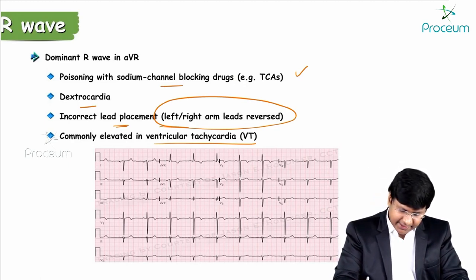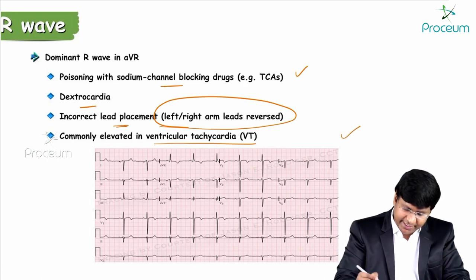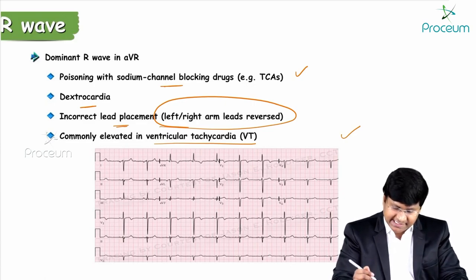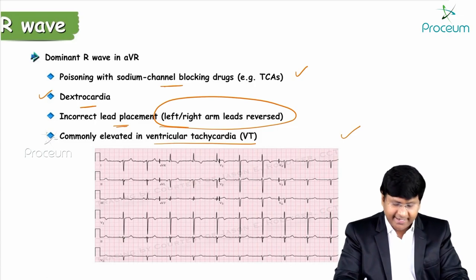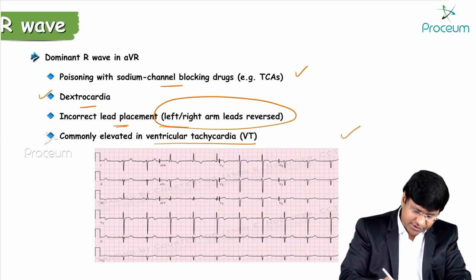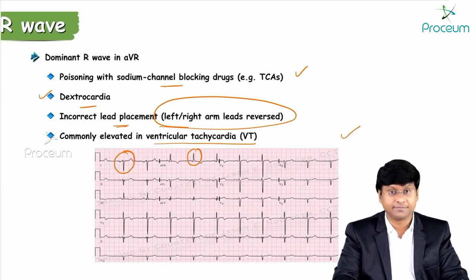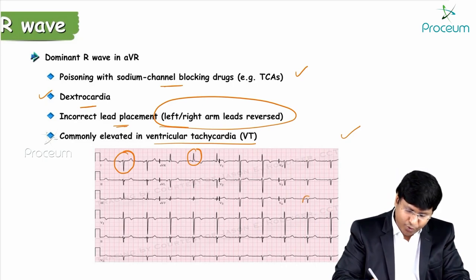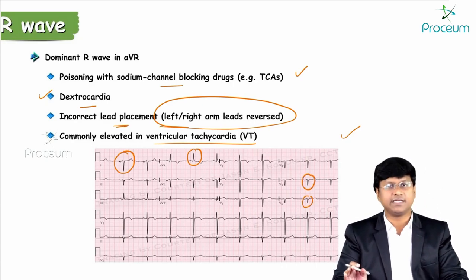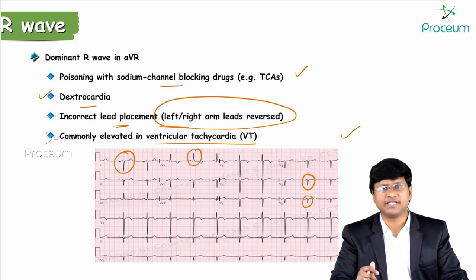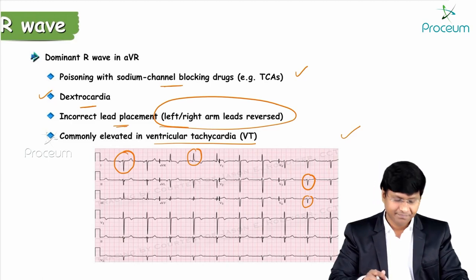ECG shown: dominant R wave in AVR, global negativity of lead I, and poor R wave progression in the precordial leads. This is the ECG of dextrocardia, fulfilling all the criteria: right axis deviation, positive QRS in AVR, global negativity in lead I, and absent R wave progression.